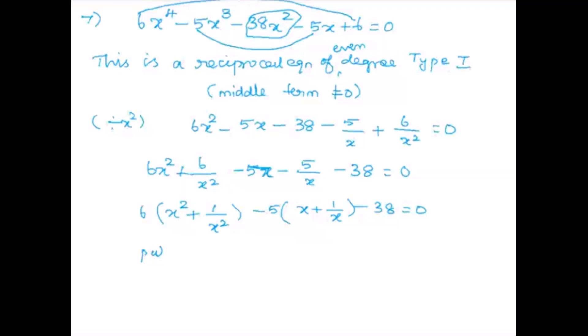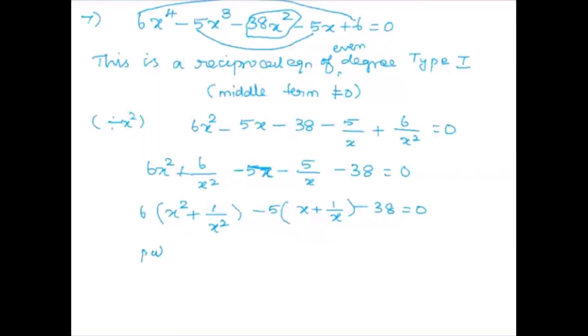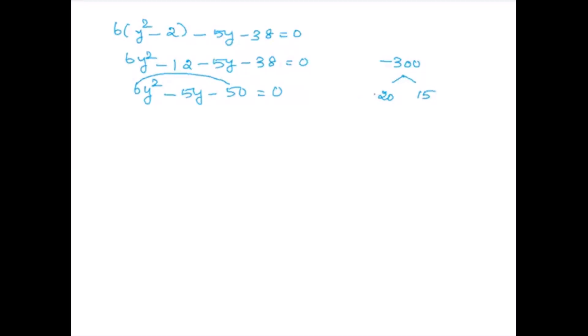Expanding: 6y² minus 12 minus 5y minus 38 equals zero, giving 6y² minus 5y minus 50 equals zero. Multiplying 6 by minus 50 gives minus 300. We need two numbers multiplying to minus 300 and adding to minus 5: those are plus 15 and minus 20. So we write: 6y² plus 15y minus 20y minus 50 equals zero.